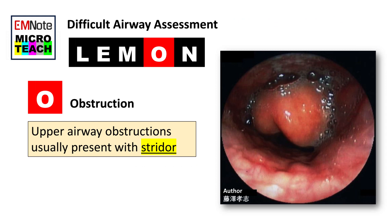A high Mallampati score — Class 3 or 4 — is associated with more difficult intubation as well as a higher incidence of sleep apnea. O stands for Obstruction. This assessment looks for any signs of airway obstruction such as tumors or foreign bodies. Upper airway obstructions usually present with stridor, so listen carefully.